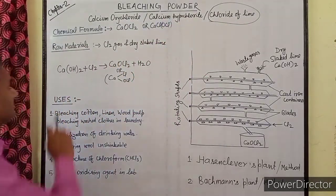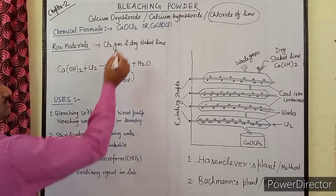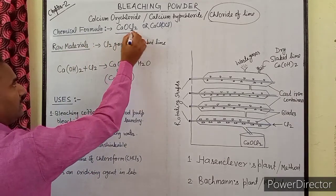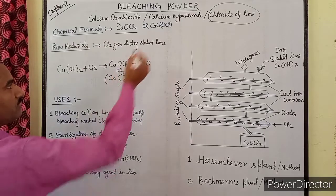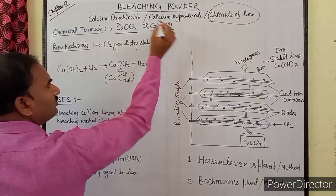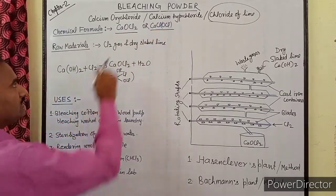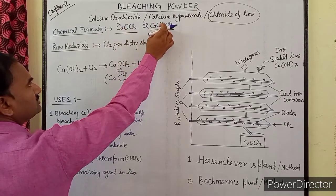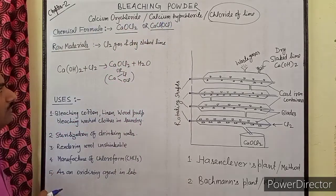Now we will talk about the chemical formula. The chemical formula of bleaching powder is CaOCl₂.